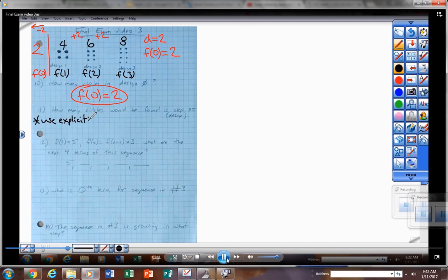So for the explicit function, I need both the d, the common difference number, and I need the f(0) term to plug those in. Because explicit is always the zero term plus d times x. So if I plug those in, the explicit form will be for this one two plus 2x.